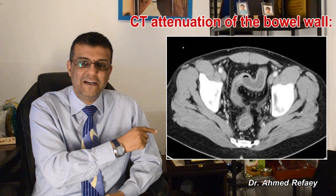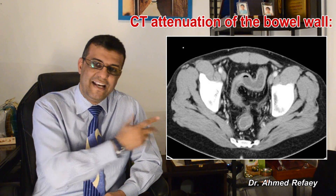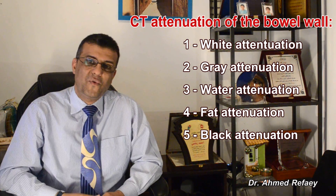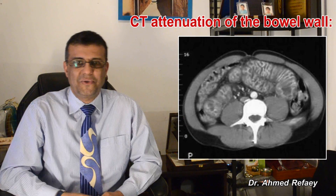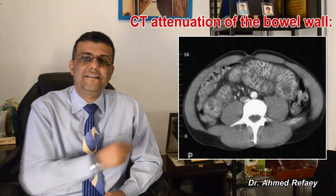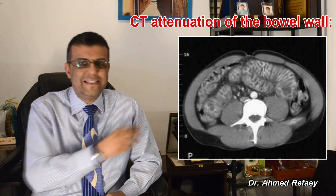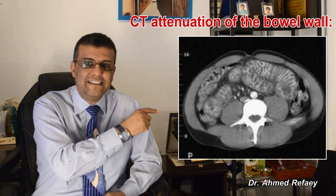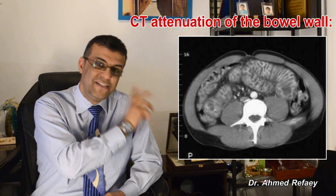Another example of white attenuation is a case of shock bowel syndrome. As you see, there is enhancement of the small intestine demonstrating increased enhancement which is greater than that of the inferior vena cava.